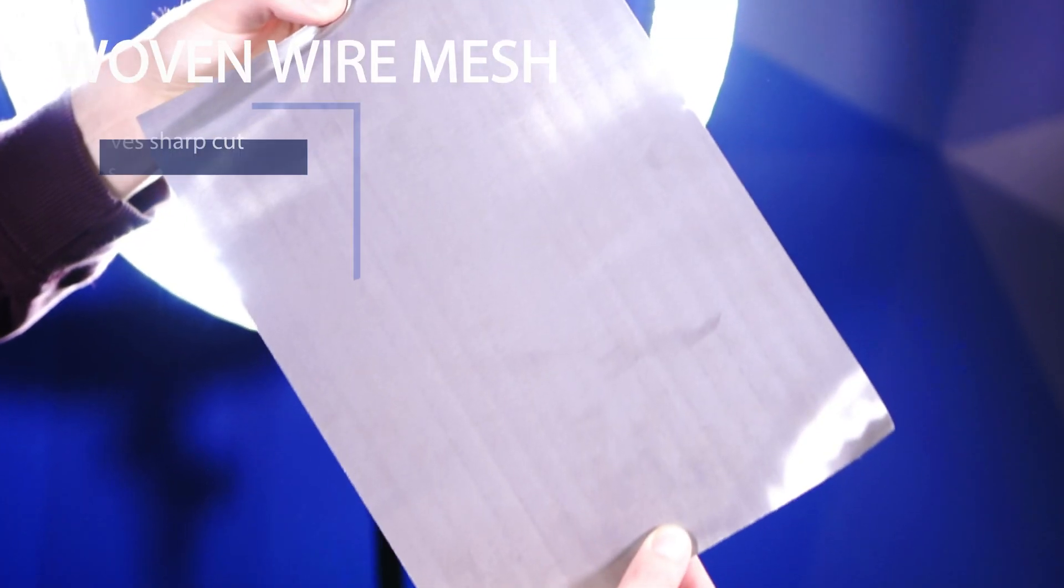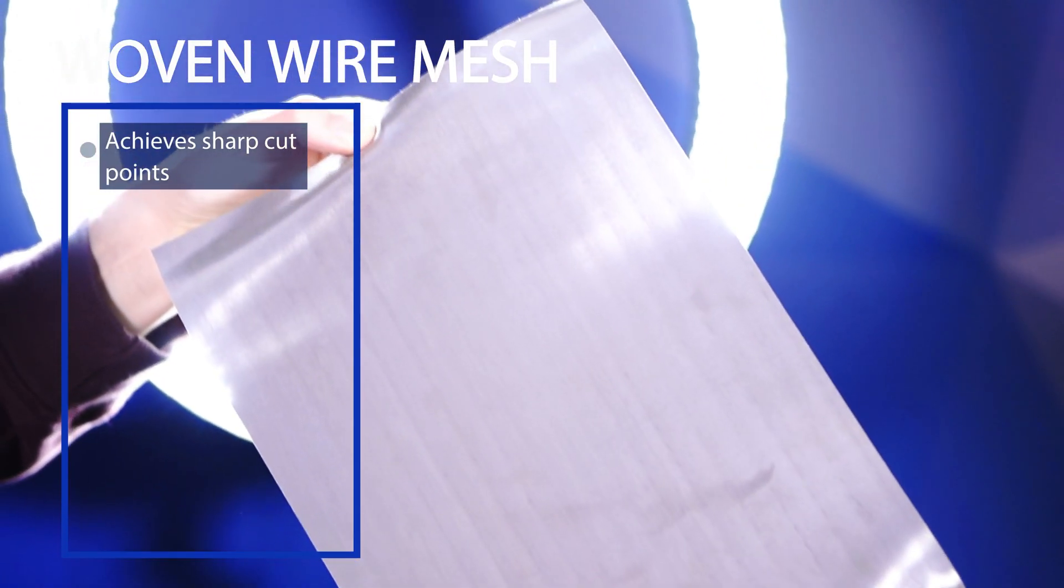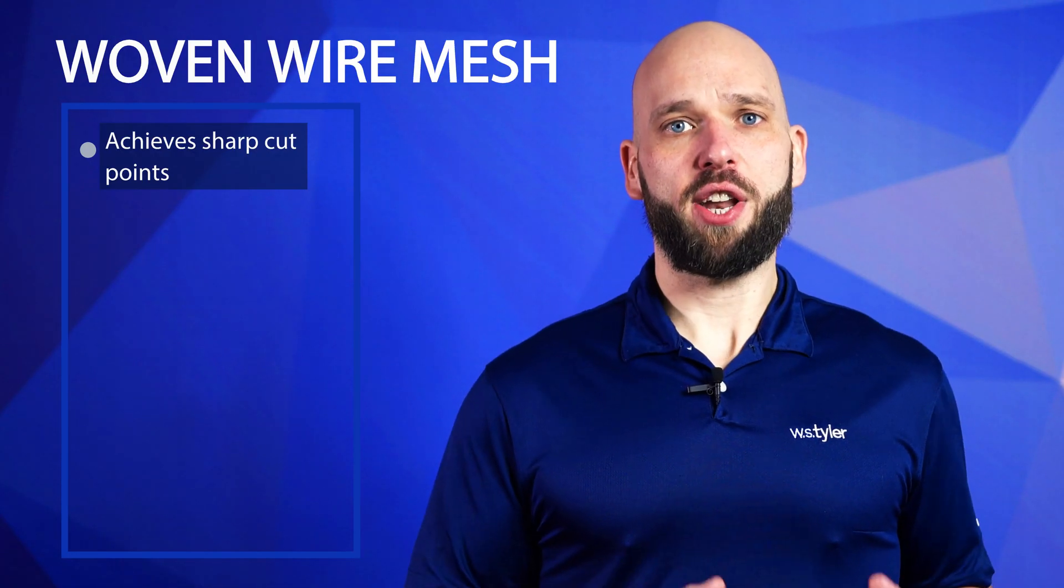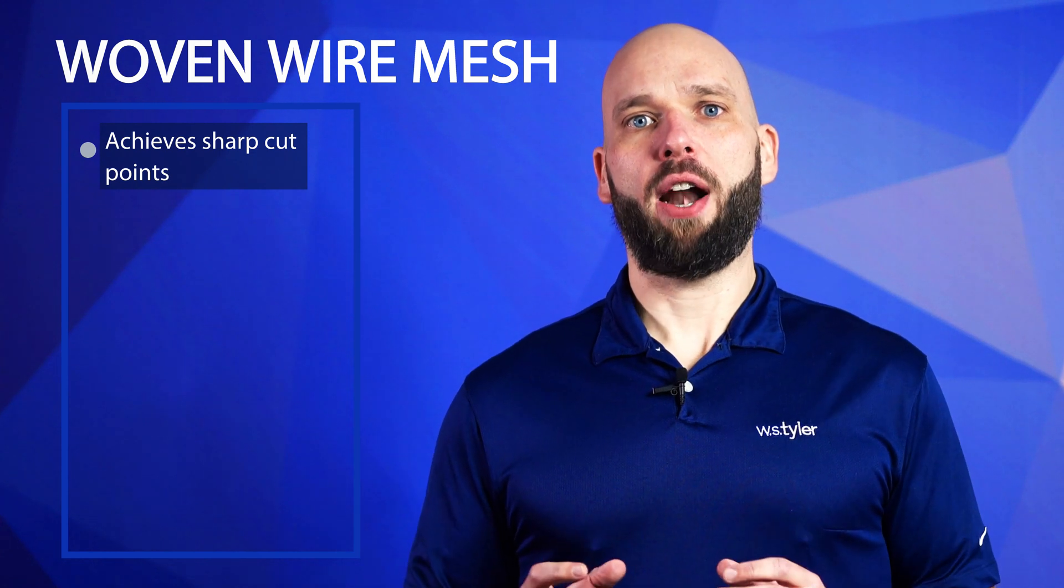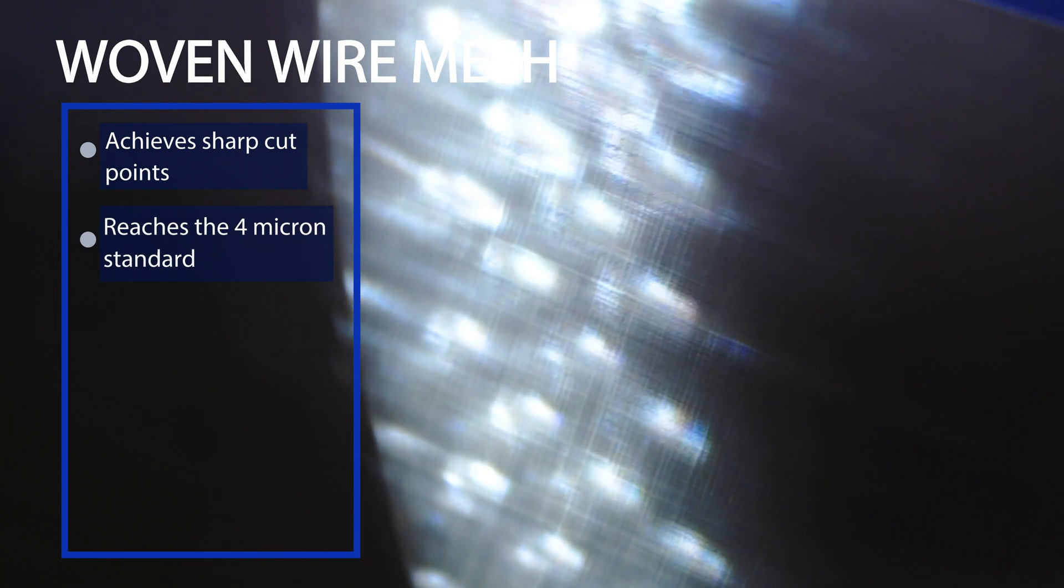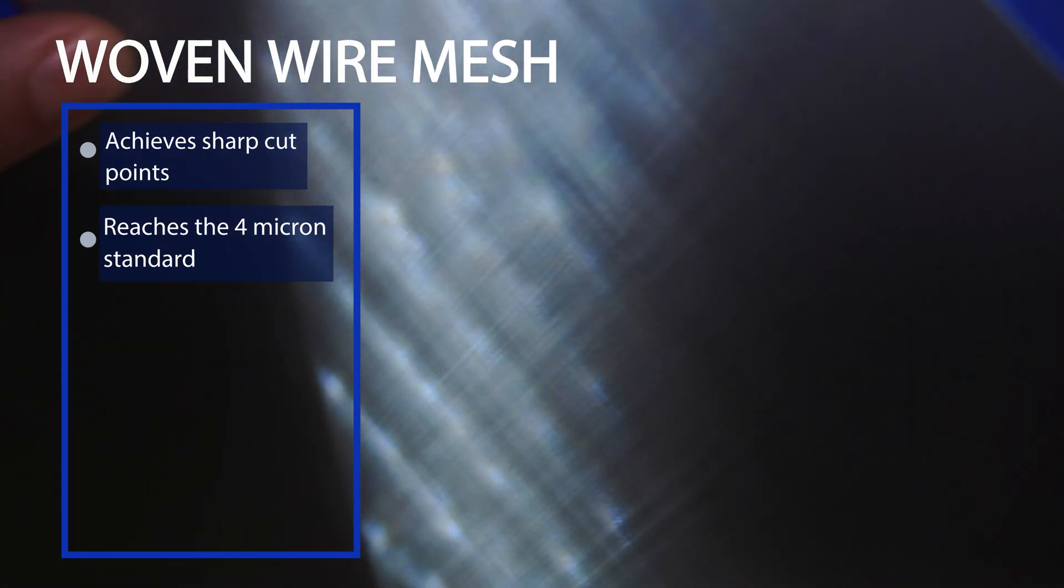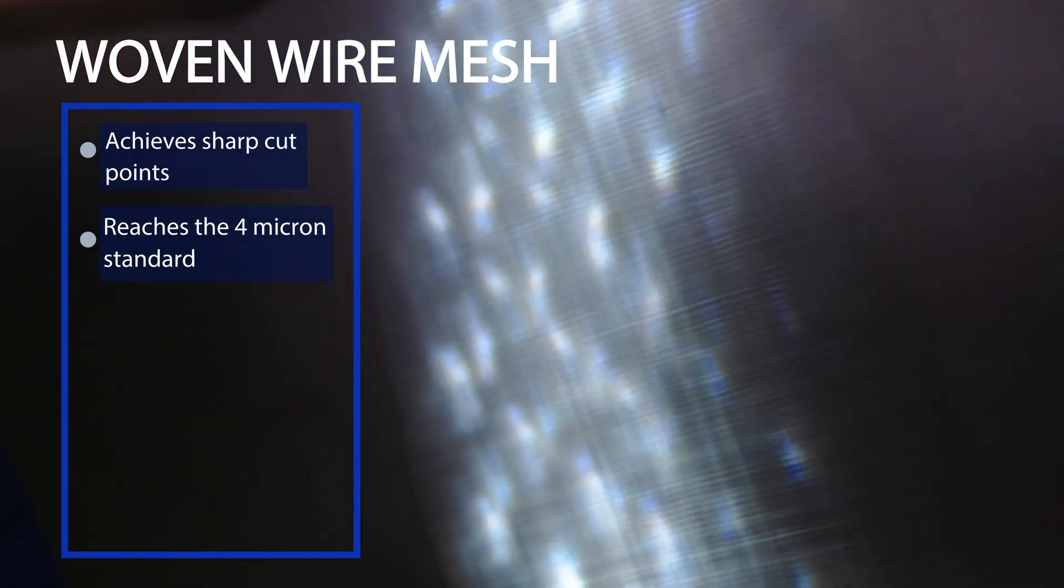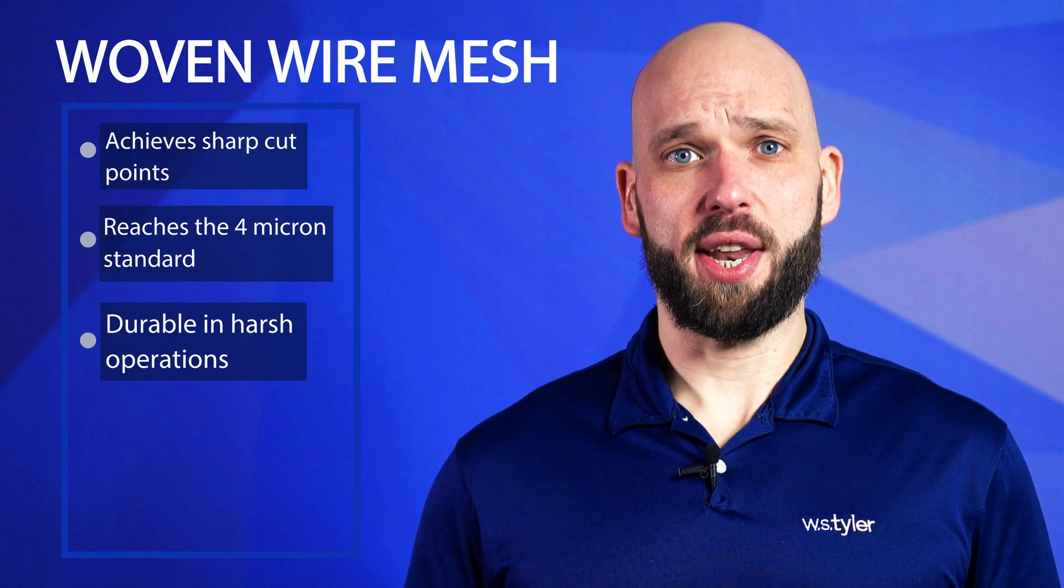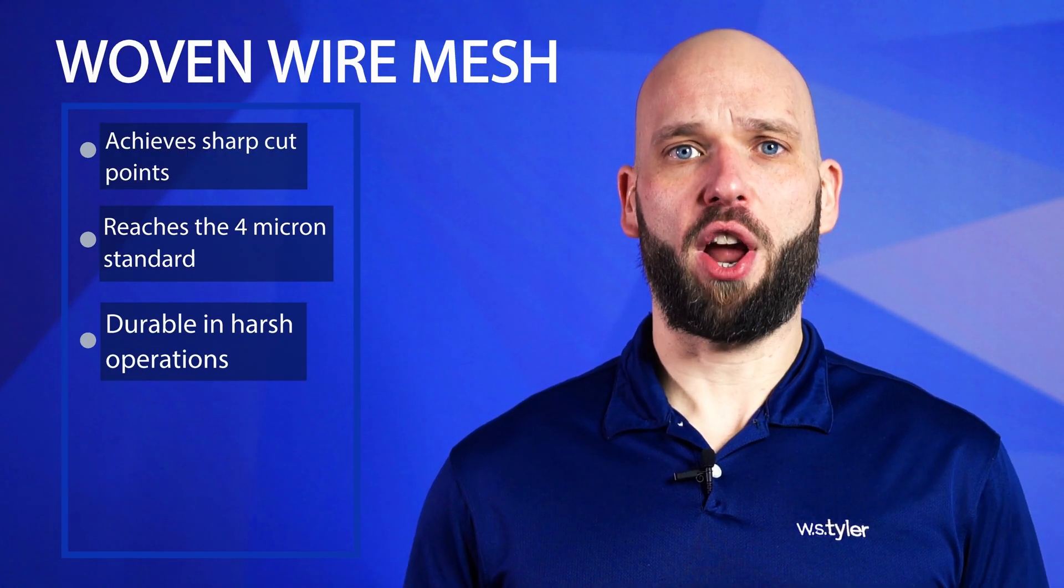By far the biggest advantage of woven wire mesh is that it achieves sharp cut points. The particle uniformity that it consistently achieves means it complies with industry standards much better than metal fiber felt. With pore openings reaching 4 micron, woven wire mesh is widely used as a filter cloth. It offers the durability and chemical resistance needed to excel in harsh operations.